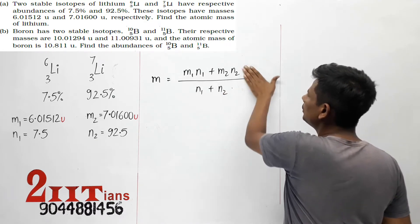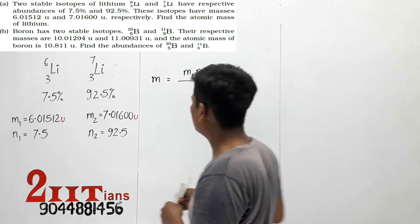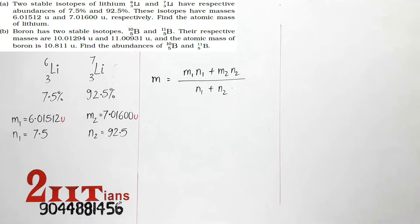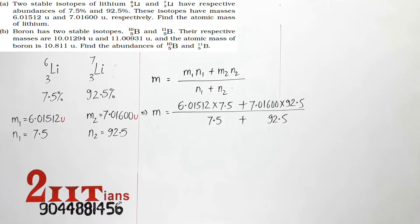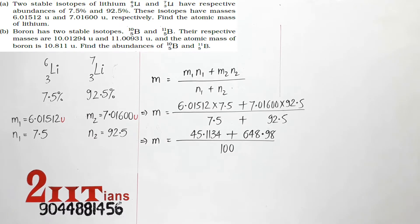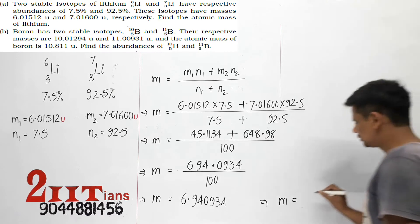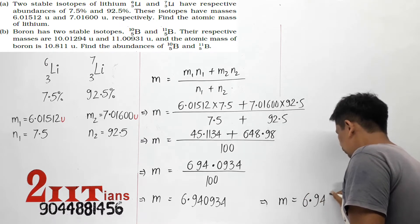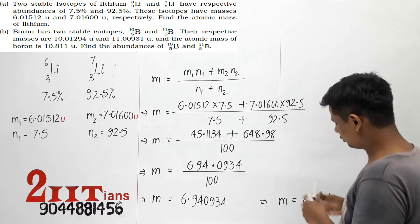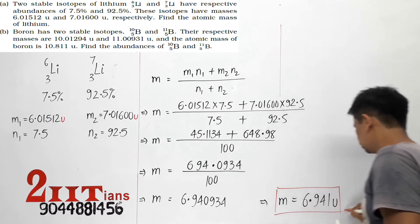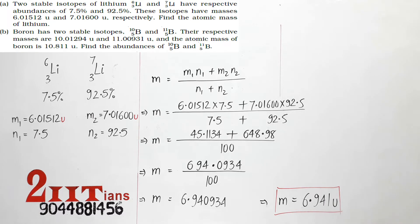Here there are only two, so we limit it to this. If there were three, we would add M₃N₃ plus N₃. Now we will put all the values into this formula and directly get M. This gives us lithium's atomic mass. NCERT has rounded it off to 6.941 units. So part A is complete.